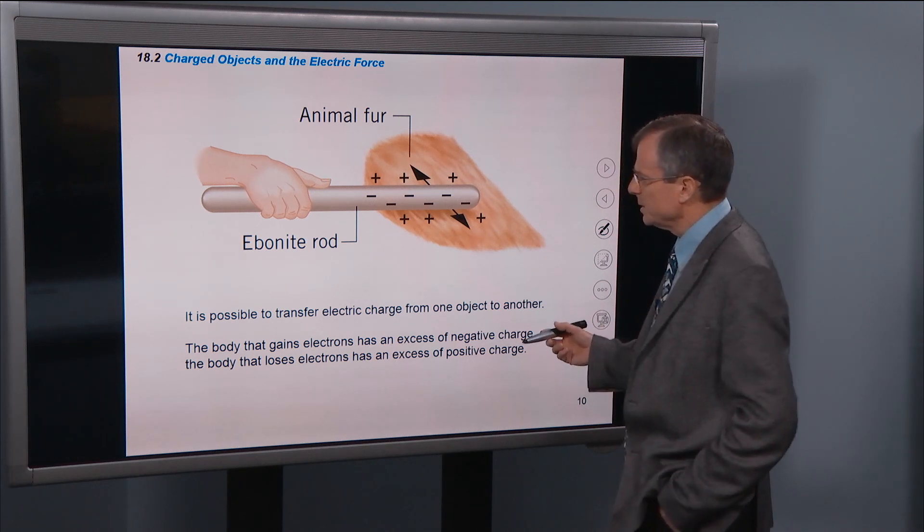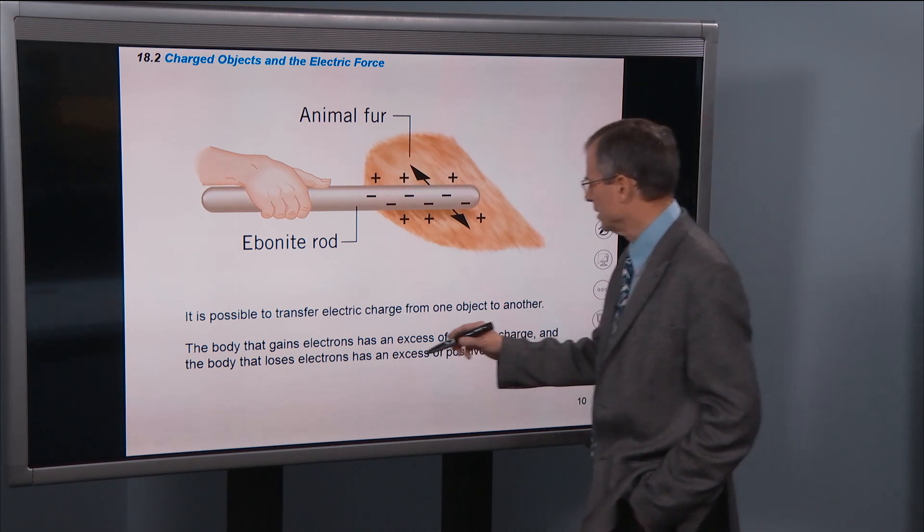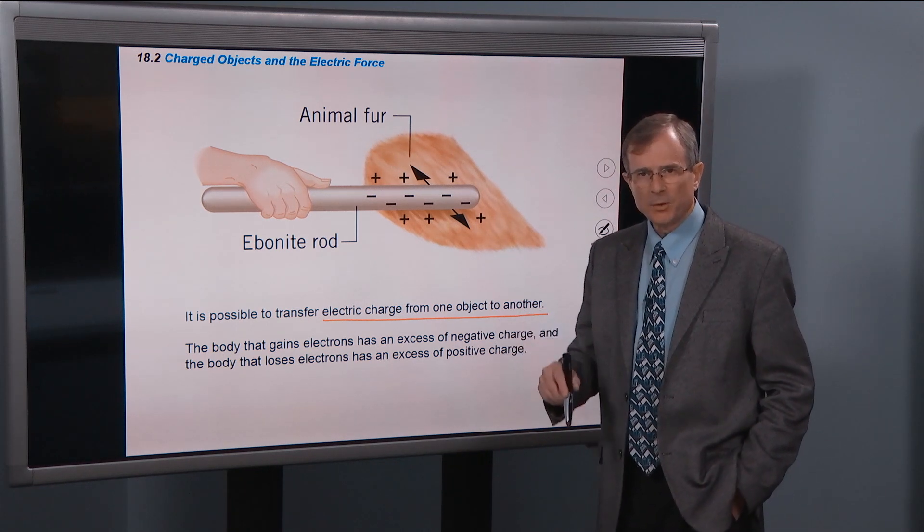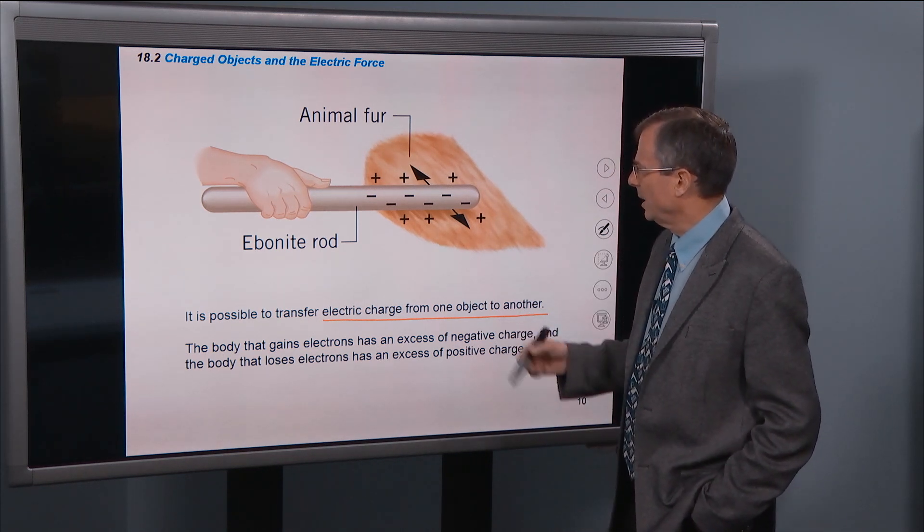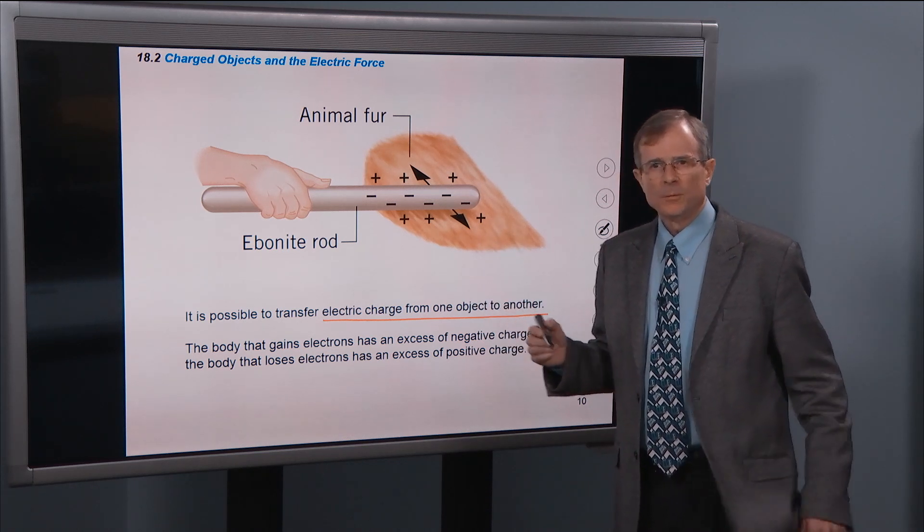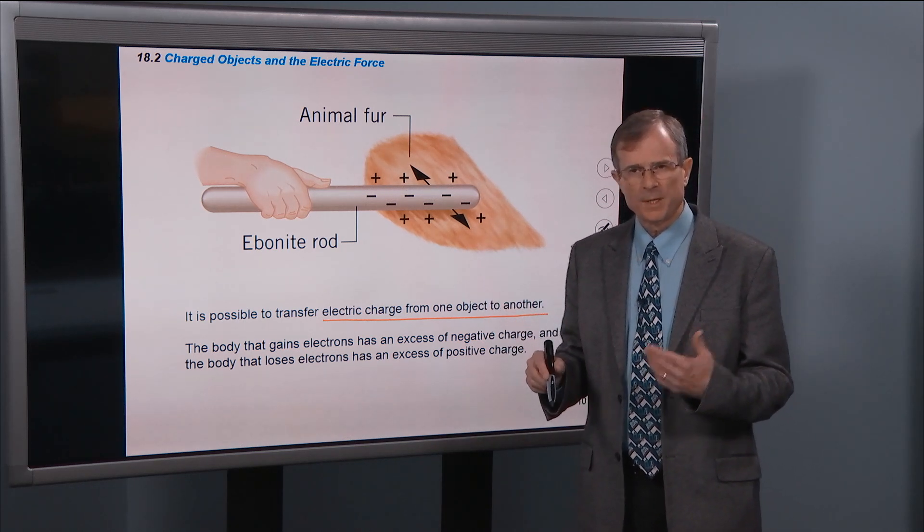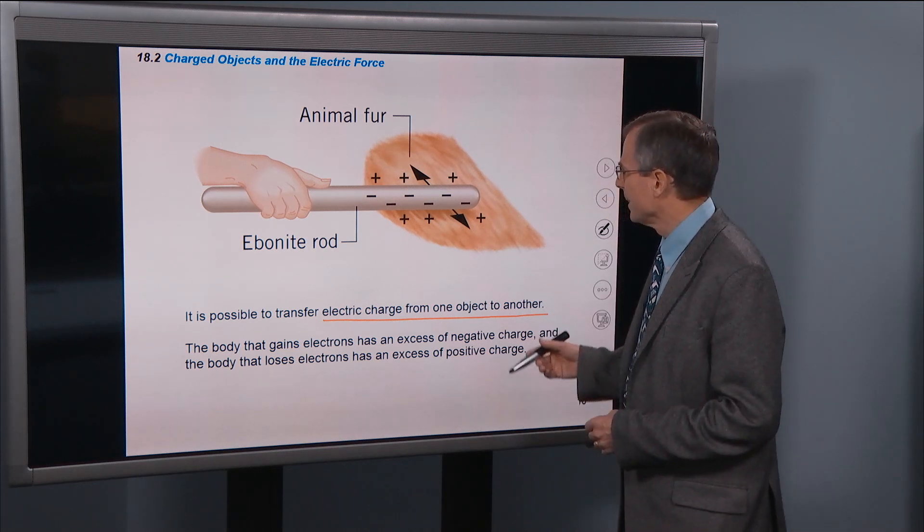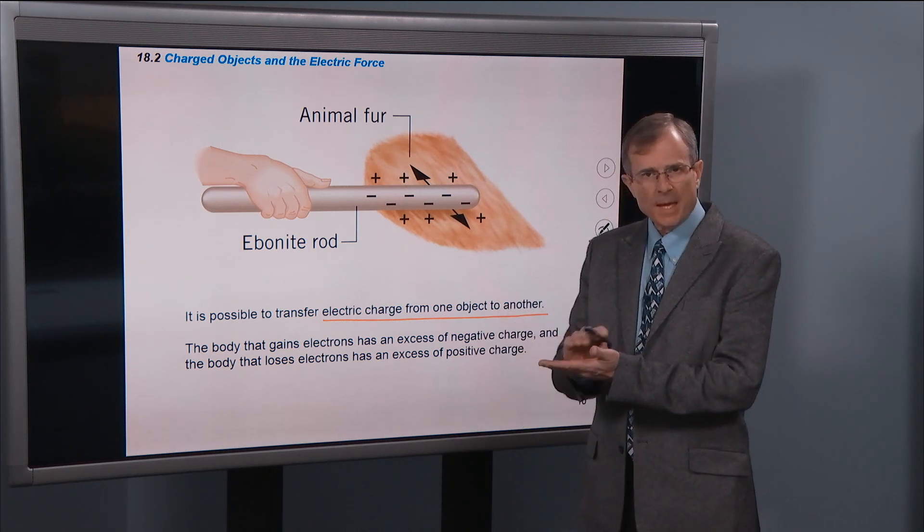First of all, it's possible to transfer electric charge from one object to another. And we'll show a demo in just a second with an ebonite rod and some animal fur. And what you have to imagine with this ebonite rod is actually colored black, black in color. When you rub that against animal fur,